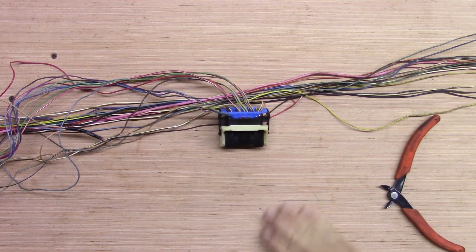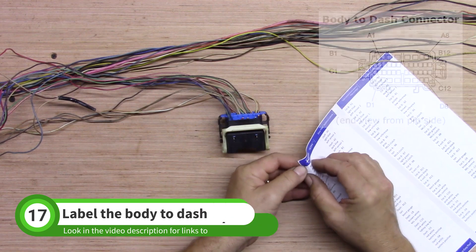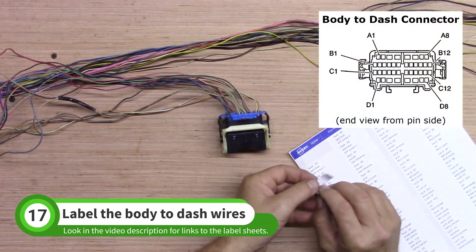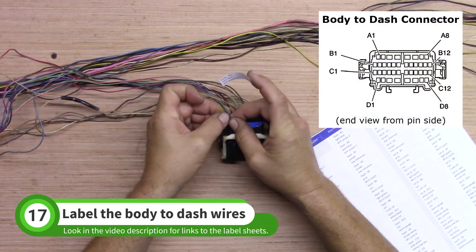Next, we'll label the wires that need to remain in the harness. Check in the video description for links to documents that will list the wire and pin information so you can make your own labels.